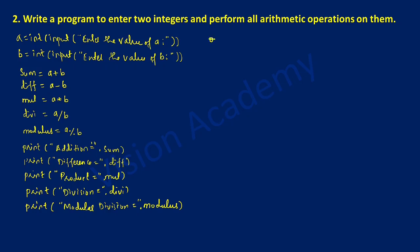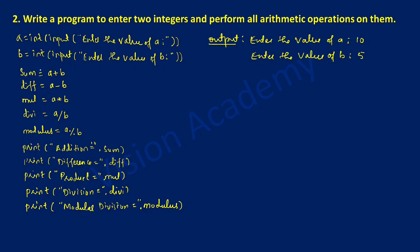Once we execute this program it will ask the user to enter the value of a. For example, the user enters 10. Next, it will ask the user to enter the value of b — for example, here I am going to enter 5. Now we are going to perform all five arithmetic operations. The first one is sum: a plus b, that is 10 plus 5 equals 15. So 15 will be stored in a variable called sum.